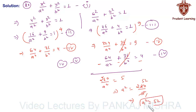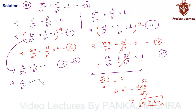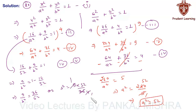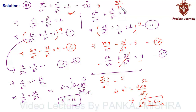Substituting a² = 52 in equation 2: 16 over 52 plus 9 over b² equals 1. So 9 over b² equals 1 minus 16 over 52, which gives 36 over 52. Therefore b² equals 9 times 52 over 36. Since 9 fours are 36 and 4 thirteens are 52, we get b² equals 13. The equation of the required ellipse is x² over 52 plus y² over 13 equals 1.